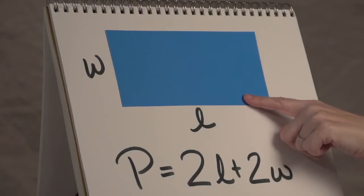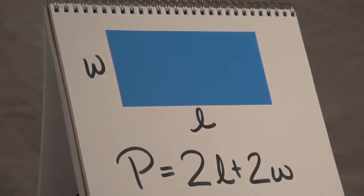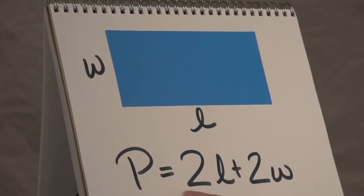Here's a rectangle with width and length, and here's the official fancy math formula: Perimeter equals 2L plus 2W.